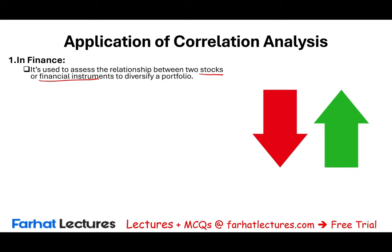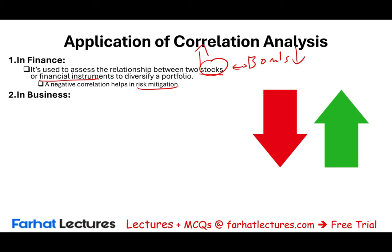In my Essentials of Investment course, we build a portfolio with stocks and bonds and study the correlation between them. When stocks go up, bonds go down — there's a negative relationship. A negative relationship between stocks and bonds helps in risk mitigation in finance. You can also look at two stocks in two different industries, for example retail versus software: when retail goes up, software goes down. So you want to find two stocks in different industries and study the relationship between them.